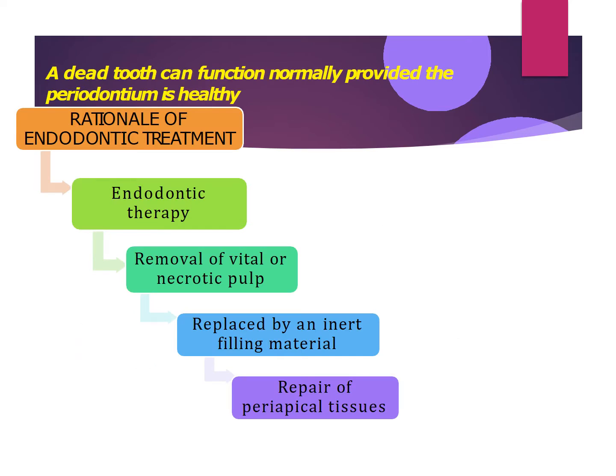What do we achieve by endodontic treatment? In endodontic therapy, we remove the irreversibly inflamed vital and necrotic pulp. After removing it, we replace this dead space with an inert filling material and achieve a three-dimensional seal, totally sealing off the coronal and apical area. By doing this, we achieve a complete repair of periapical tissues. This tooth which has been root canal treated can now function normally inside the oral cavity, provided the periodontium is healthy. This is the rationale of doing endodontic treatment.